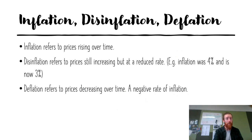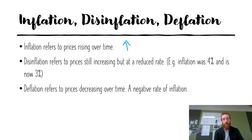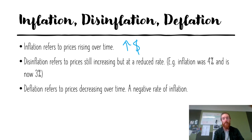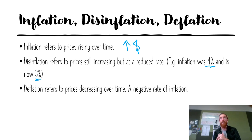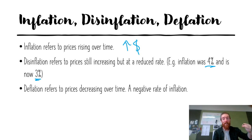The difference between inflation, disinflation, and deflation: inflation refers to prices rising over time — increasing prices. Whereas disinflation refers to prices still increasing, but at a reduced rate. So if inflation was 4% in one period and 3% the next, prices have still increased but at a reduced rate. It's really important to point out that with disinflation, prices are still going up — they're just going up at a slower rate than they previously were.